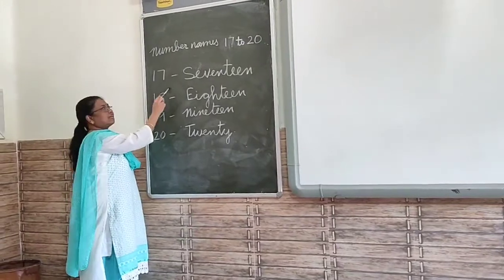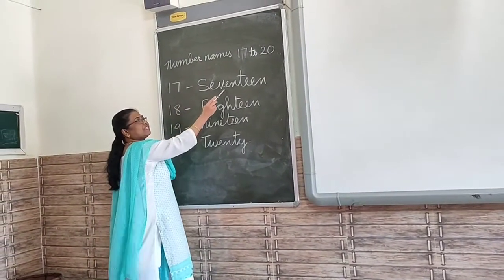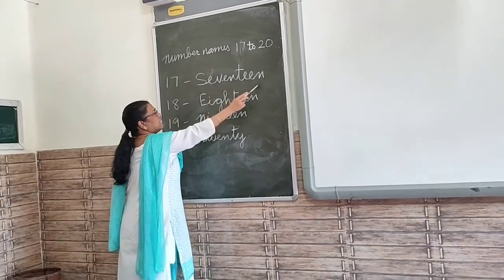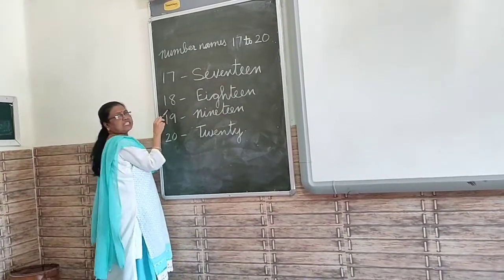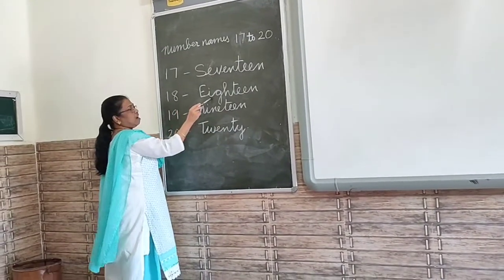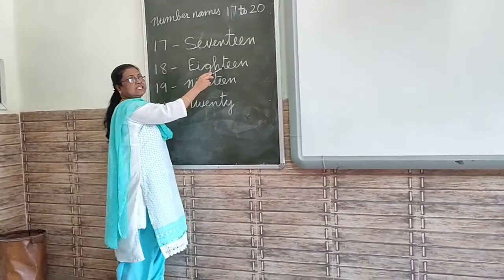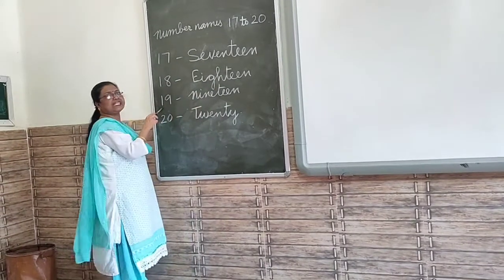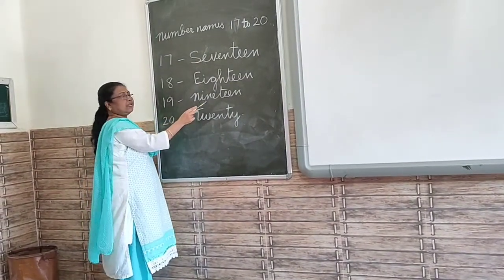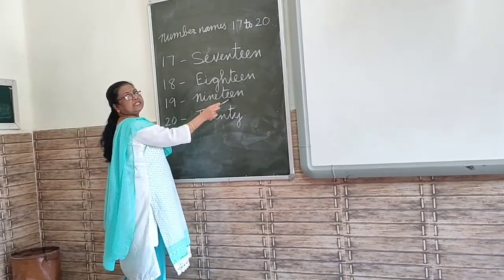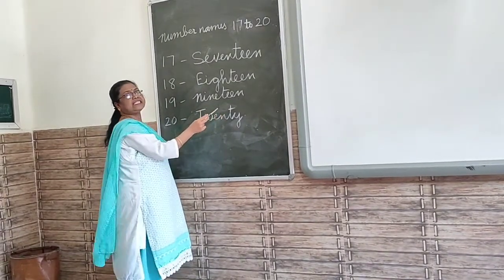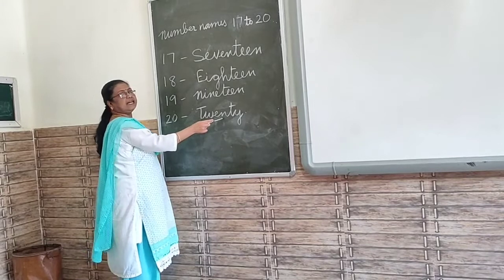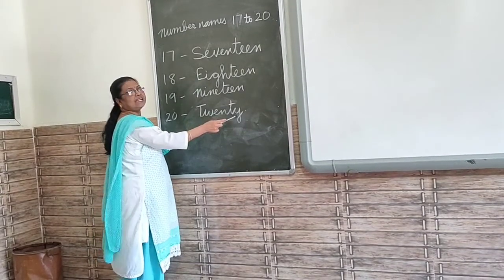17: S, E, V, E, N, T, W, E, N. 17. 18: E, I, G, E, N, T, W, E, N. 18. 19: N, I, N, E, D, W, E, N. 19. 20: T, W, E, N, T, W, E, N. 20.